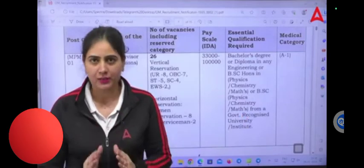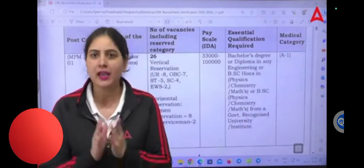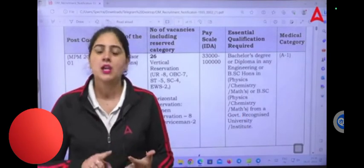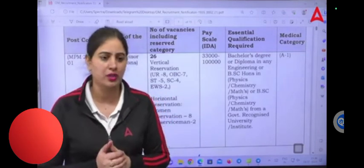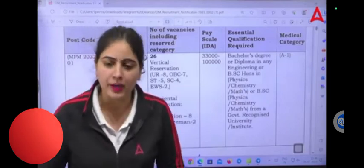If you have any technical degree or diploma, if you have BSc physics, chemistry, or a degree in engineering, then you can apply this form. The form filling will start from 31st July. The A1 here is a medical category.